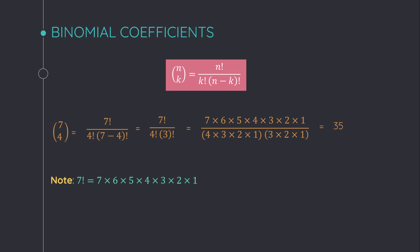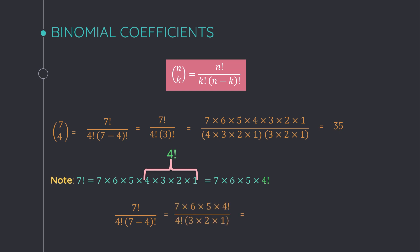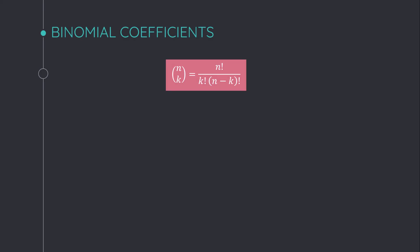You can simplify this in a different way. Factorial 7 can be written as factorial 4 times the rest of the numbers, since 1 to 4 is factorial 4. Then we can cancel factorial 4 from the top and bottom, simplify the remaining numbers, and the answer is again 35.